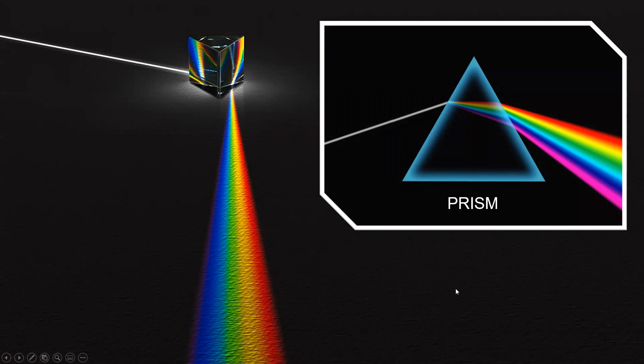allowing us to analyze the light and perhaps determine its composition, its speed, and maybe even its age, mass, and things like that. It takes a lot of work to analyze light, but a prism is one tool you can use to analyze light. Another one is a diffraction grating.